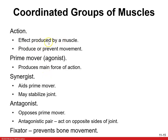Muscles produce an action — like the biceps bends your elbow, the quadriceps extends your knee. You have a prime mover, which is the agonist. For knee extension, your prime mover is your quadriceps. Your antagonist for knee extension would be your hamstrings. Sometimes you have a synergist which aids the prime mover — for the biceps, the synergist is the brachialis, which helps that movement. And the fixator prevents unwanted bone movement.